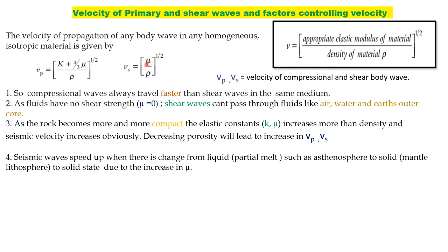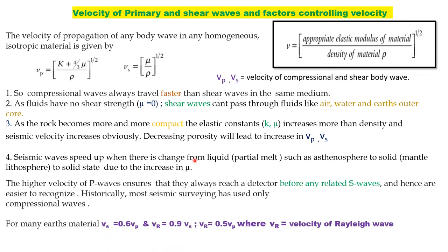Since P-wave velocity is higher, P-waves always reach a detector before S-waves and are easier to recognize. Most seismic surveying uses compressional waves because of their higher velocity and the vertical ground motion sensitivity. For many earth materials, the surface wave (Rayleigh) velocity is about 60% of the primary wave velocity, and the Rayleigh wave velocity is approximately 90% of the surface wave velocity — so Rayleigh wave velocity is roughly half of the primary wave velocity.